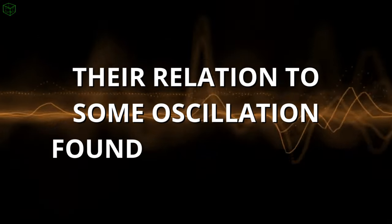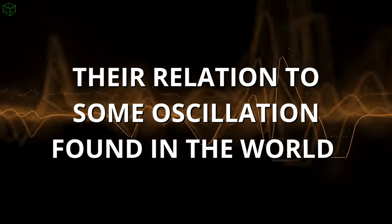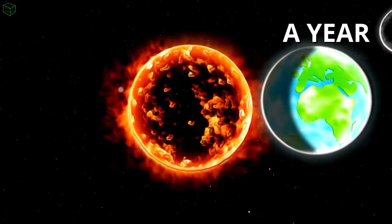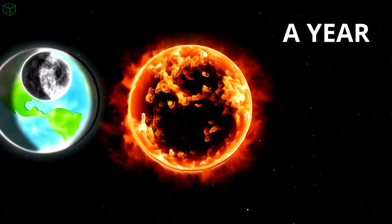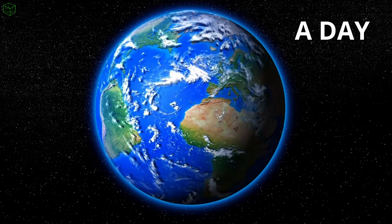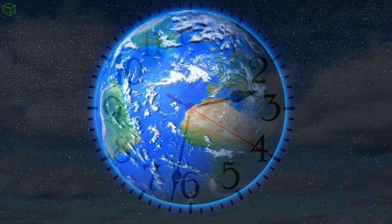However, what all these ways of measuring time have in common is their relation to some oscillation found in the world. For example, the year is marked by the completion of one orbit of the Earth around the Sun. The day is one full rotation that the Earth makes around itself, and hours are determined by dividing this period by 24.